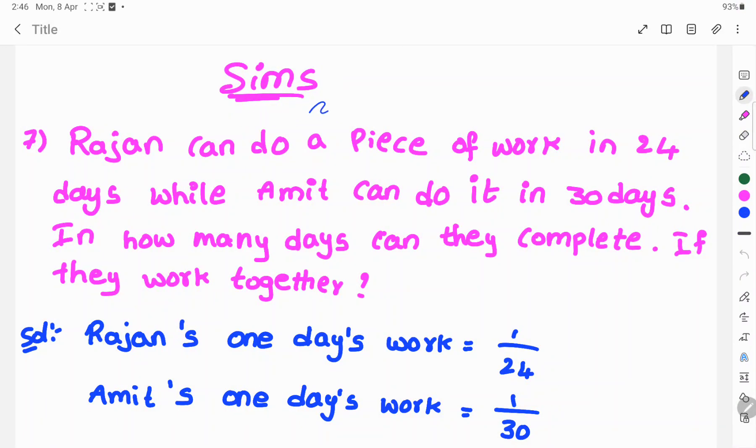Hi! Welcome to Sims. Today's time. Rajan can do a piece of work in 24 days, while Amit can do it in 30 days. In how many days can they complete if they work together?